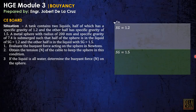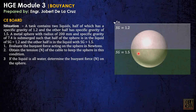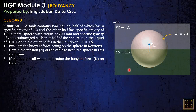We have two liquids here with specific gravity of 1.2 and specific gravity of 1.5. The metal sphere is positioned such that half is in the lower liquid and half is in the upper one. The sphere has SG of 7.4, so it is very heavy. For number 1, we evaluate the buoyant force acting on the sphere in newtons. Since we have different liquids, we must consider each side separately: Fb1 due to the upper liquid and Fb2 due to the lower liquid.